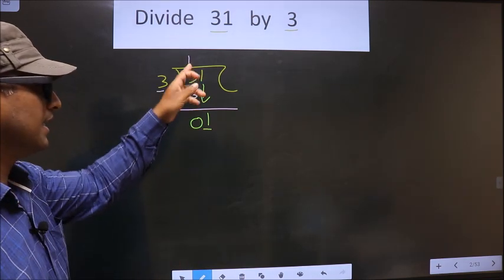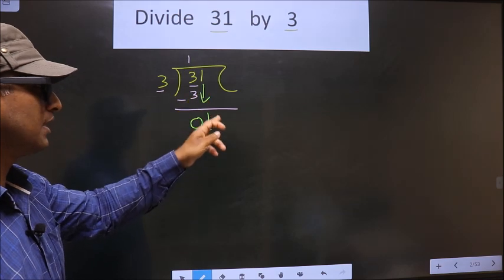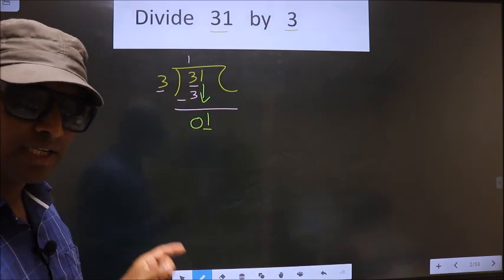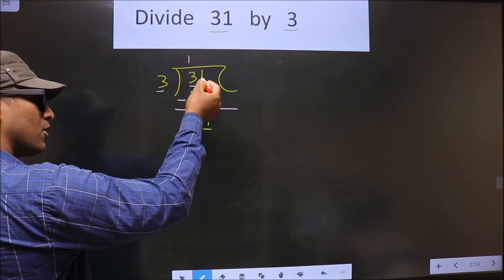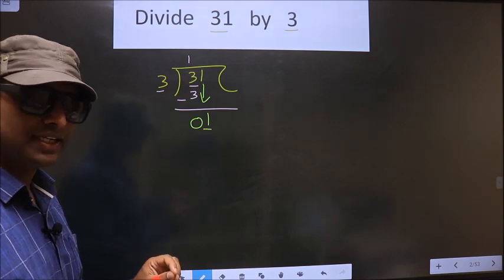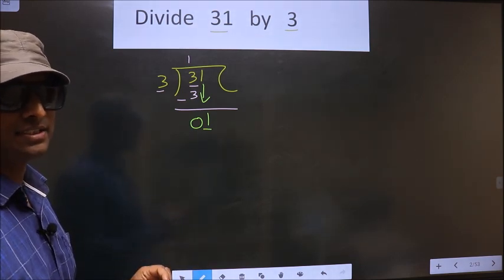So what they do is they take the decimal and put 0 here, which you should not do. Over here, you brought this number down. That's it. Here itself you should not take decimal and 0.